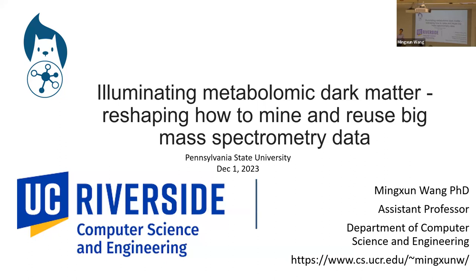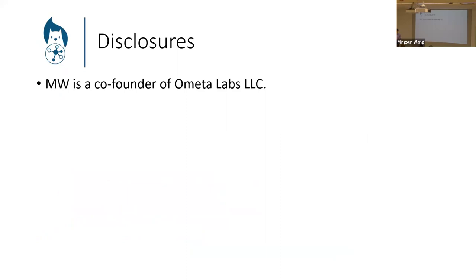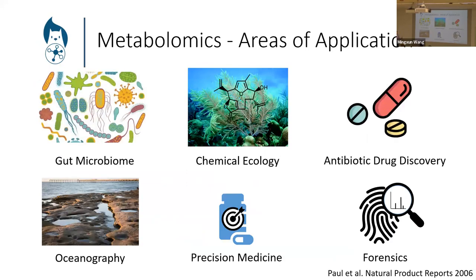Hopefully throughout this talk we can introduce you to some broad concepts that we've been working on over the past couple of years, and you will be able to connect it to how it might be useful to your work. My expertise is in analyzing untargeted metabolomics data — and when we scale that up, what can we start doing and what can we start finding? Some of the areas where untargeted metabolomics has been really useful include things like the gut microbiome, chemical ecology being from Southern California, drug discovery, drug metabolism, forensics, and oceanography, just as a sampling.